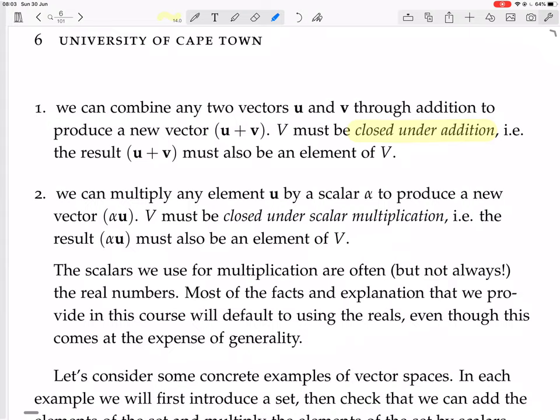Two: we can multiply any element u by a scalar alpha to produce a new vector alpha·u. That is, V must be closed under scalar multiplication — the result alpha·u must also be an element of V.